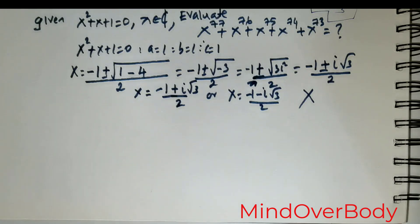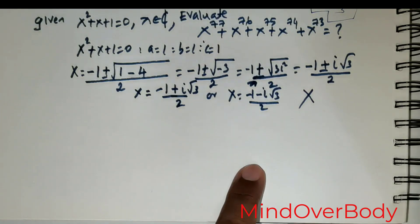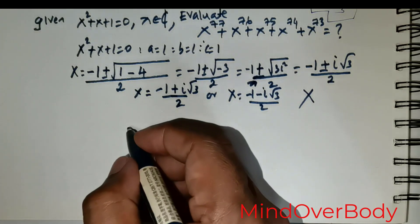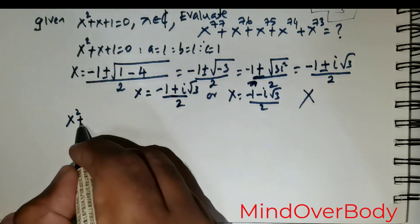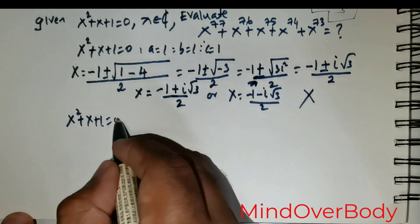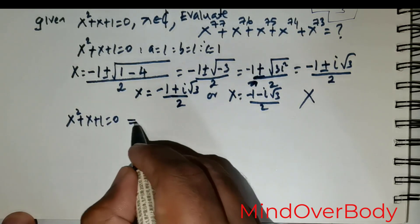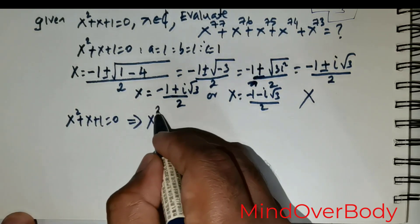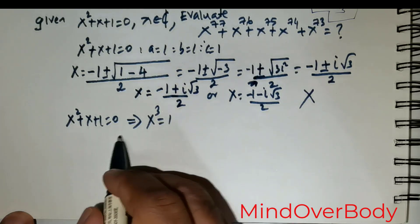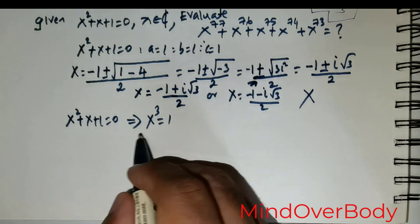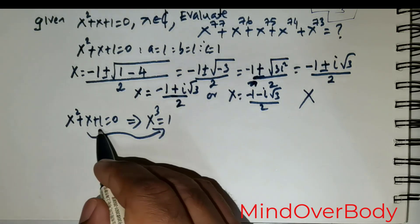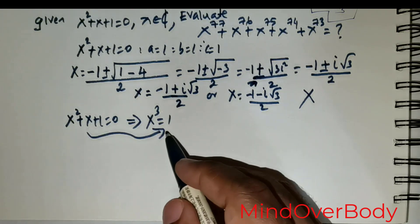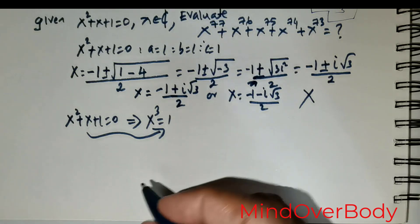Now why are these two values important? Some students would immediately conclude: I've been given x squared plus x plus 1 equals 0, so that must mean x cubed equals 1. But what they are missing is that you can't simply jump from x squared plus x plus 1 equals 0 to x cubed equals 1 without justification. How are you getting it? That is the important point.